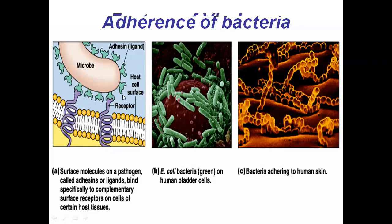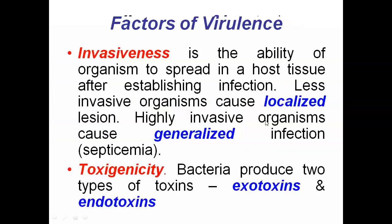The surface molecules on the pathogen, these are called adhesins or ligands. They bind specifically to the complementary surface receptors present on the cells of the host organism. This image shows E. coli bacteria in green color, which are attached to the human bladder — these are bacteria adhering to the human tissue.